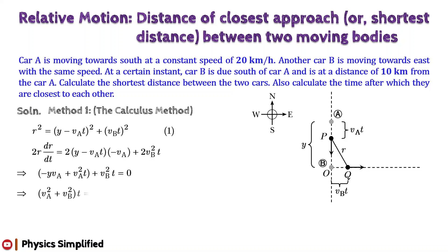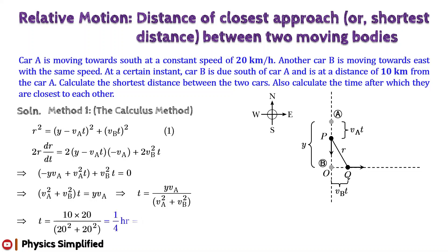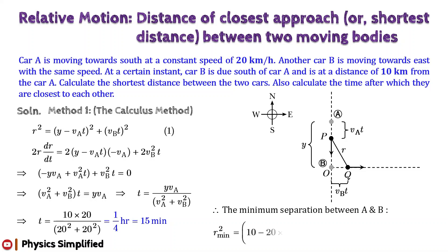Simplifying, we get t = 1/4 hours, that is 15 minutes. So, after 15 minutes the two cars A and B will be closest to each other. Now, substituting the values of t and all other terms in equation 1 and simplifying, we get the minimum separation of A and B. It is given by r_min = 5√2 kilometers. This is the shortest distance between the two cars A and B.